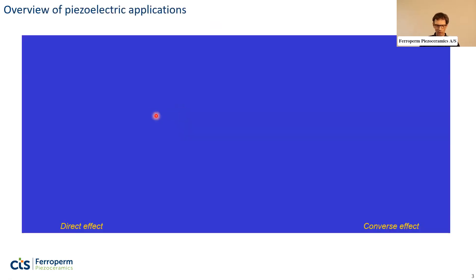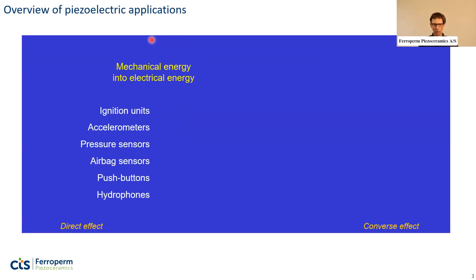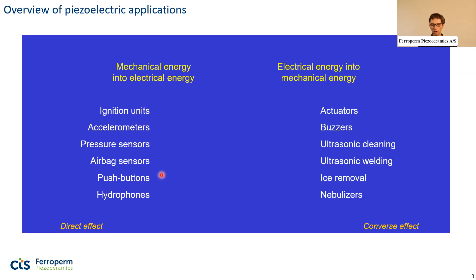First, I'll give an overview based on the type of effect. Those who attended the first webinar will know about the direct piezoelectric effect and the converse. With the direct effect, we convert mechanical energy into electrical energy. One simple example is the ignition unit, where a spark is generated by stress converted into an electric spark. Another application is pressure sensors, and I'll also show an example of a hydrophone — basically an underwater microphone.